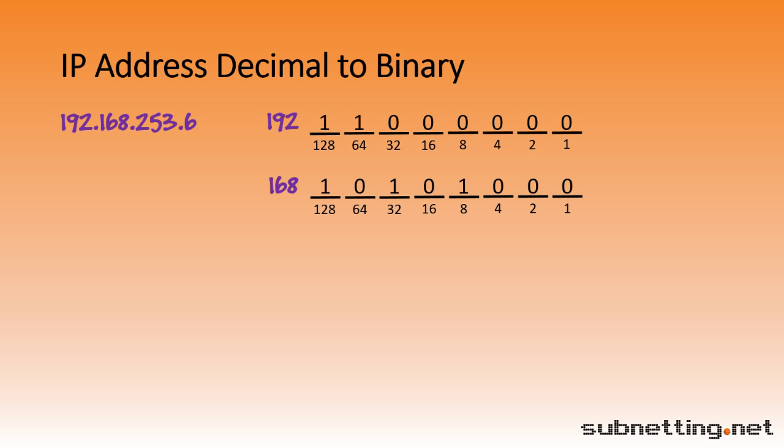Now let's do 253. We need 128. Plus 64 is 192, we need it. 192 plus 32 is 224, we need it. 224 plus 16 is 240, we need it. 240 plus 8 is 248, we need it. 248 plus 4 is 252, we need it. 252 plus 2 is 254, that's too high, so we don't use 2. 252 plus 1 is 253, and that's our number.